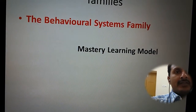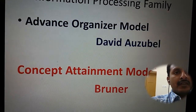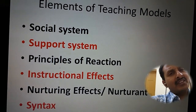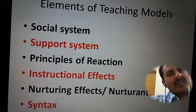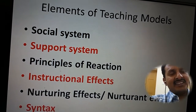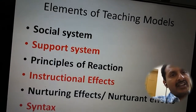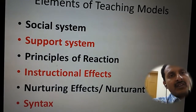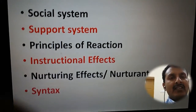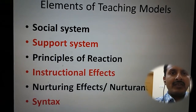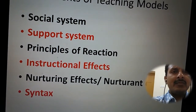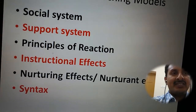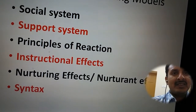The elements of teaching models are as follows. Social system means the atmosphere of the classroom — whether the classroom has a liberal, democratic, or structured atmosphere. It can be called a highly structured, moderately structured, or loosely structured atmosphere. Support system means teaching-learning supports — we can simply call it teaching-learning aids. That is the support system.